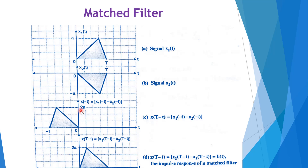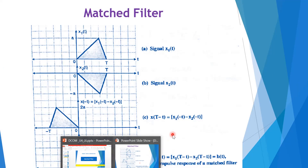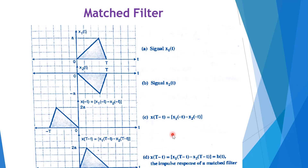We can see the changes in amplitude, giving us x(−t) with amplitude 2A. It is then easy to find the delayed version x(t − T) = x₁(t − T) − x₂(t − T), which is our impulse response h(t) of the match filter.